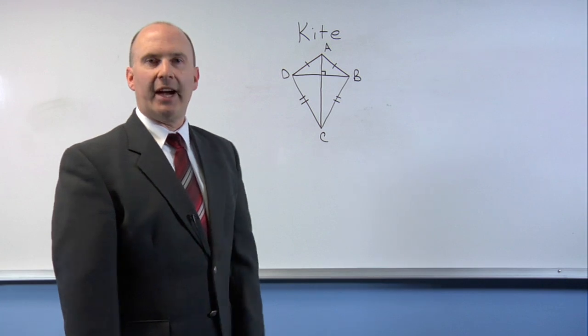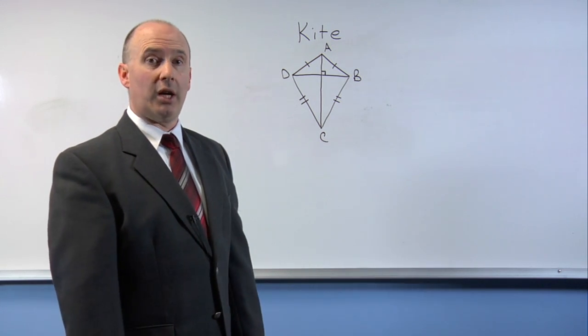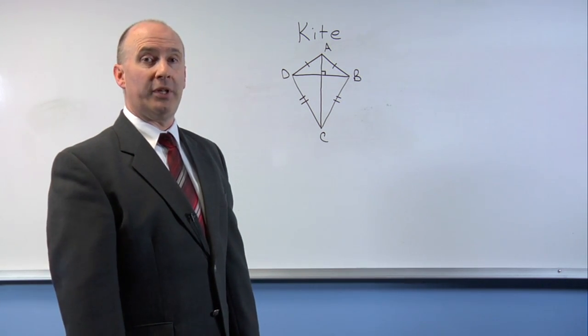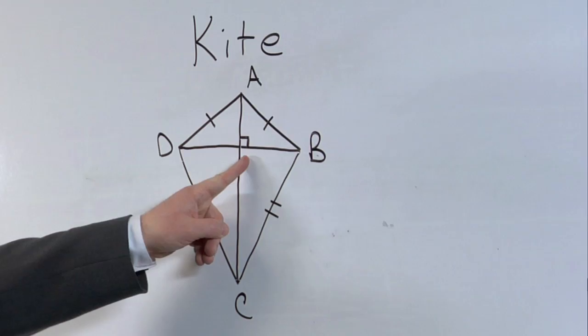The diagonals of a kite do cross and intersect at perpendicular angles. That is indicated with the square in the middle.